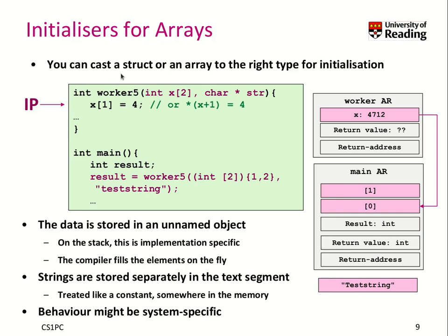Let's now talk about initializers for arrays. Remember, we can cast a structure or an array to the right type using a cast notation. So if I want to cast something to be an array of two integers, I can use this notation: in brackets, integer, 2.